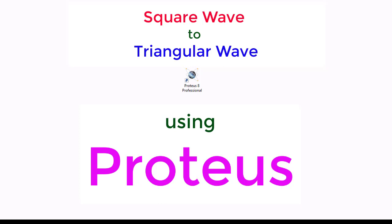Welcome to this tutorial. Here I am going to design a circuit using Proteus. I shall design a circuit which will convert a square wave to a triangular wave. The input of the circuit is the square wave and the output of the circuit will be a triangular wave.